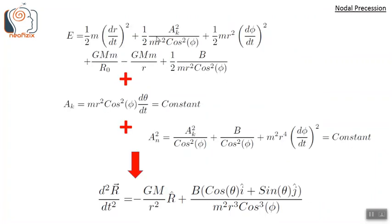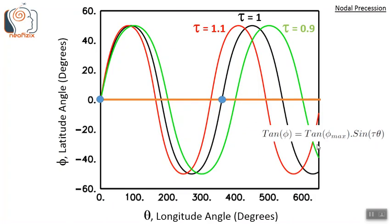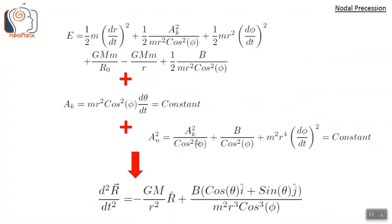To recap: we get nodal precession when the gravitational potential energy is modified by this inverse-square term, seen in both the energy equations and the force equation. Equivalently, the force equation is modified by an inverse-cube term pointed along the zonal direction. Under this modified gravity condition we get precessing orbits which are almost the same as elliptical orbits in form, but with a θ coefficient τ that causes the precession. In the next parts we shall discuss apsidal and nodal precession occurring together in the same equation, and also apply it to explain the precession of earth, moon, or satellites.